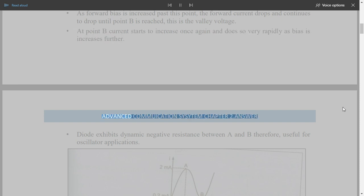A current voltage characteristics for a typical germanium tunnel diode is shown in figure. Forward current rises sharply as voltage is applied. At point A, peak voltage occurs. As forward bias is increased past this point, the forward current drops and continues to drop until point B is reached. This is the valley voltage. At point B current starts to increase once again and does so very rapidly as bias is increased further. Diode exhibits dynamic negative resistance between A and B therefore, useful for oscillator applications.